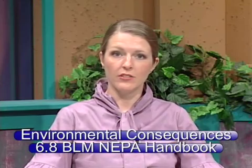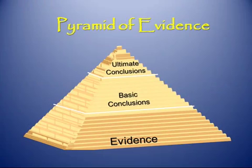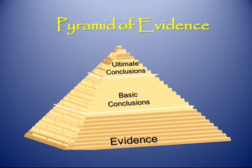The final step in your NEPA analysis is to analyze the environmental consequences. It's by looking at the environmental consequences of our action that we achieve the overall purpose of NEPA. This section will address the issues identified earlier in your NEPA process. Your environmental consequences section develops an overall pyramid of evidence. First, the ID team will gather evidence and information regarding resources, apply logic in thinking through how the proposed action or alternatives could affect those resources, and draw basic conclusions about those overall impacts. These are then used by decision makers in making the ultimate determination of if or how to move forward with agency action.